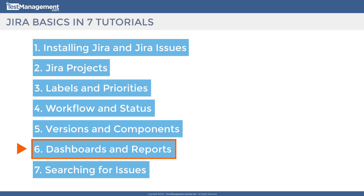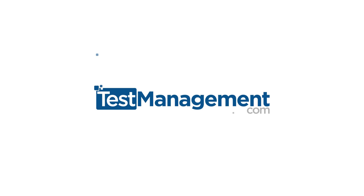That concludes Module 5 of the Jira Basics course on versions and components. In Module 6 we'll start to look at dashboards and reports, seeing how to add widgets and gadgets to Jira dashboards for a one-page view of project status, and how to build reports that show the status of those projects.